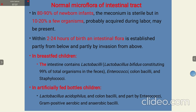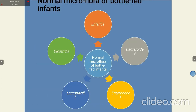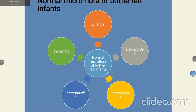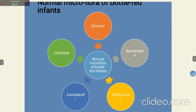In cases where the newborn is given bottle milk, the microflora will include Lactobacillus acidophilus, Lactobacillus bifidus, and partly Enterococci, gram-positive aerobic and anaerobic bacilli. For bottle-fed infants, the microbes present are Enterics, Enterobacteriaceae, Bacteroides, Enterococci, Lactobacilli, and Clostridia.